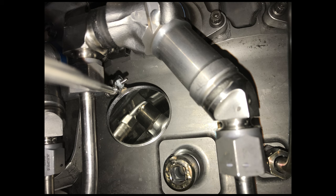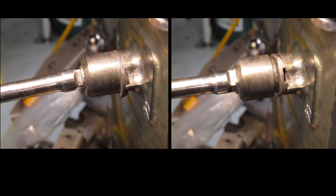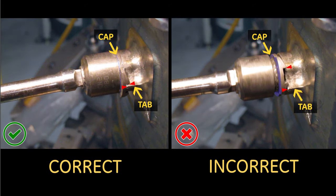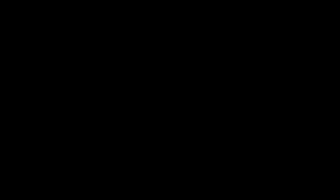Using a mirror if necessary you need to inspect the plugs to make sure the ratchet teeth are covered by the cap and the locking mechanism is astride the boroscope port tab.